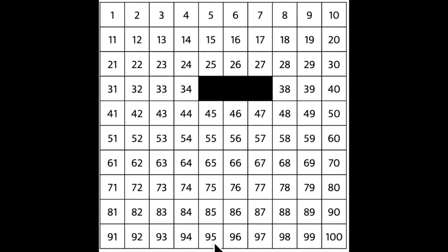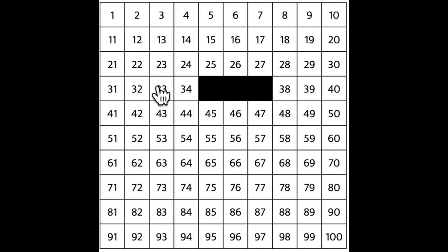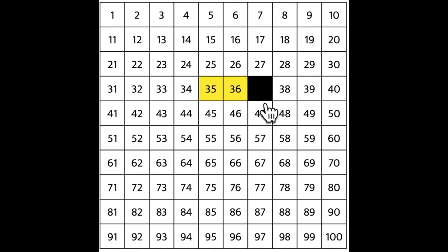Take a look at this 100s chart. Some of the numbers are missing. The numbers that are missing are all next to each other. I need to figure out if the numbers are missing from a row or a column. Since the numbers that are missing are moving from left to right, that means they are missing from a row. Remember, a row moves up one at a time. To find the missing number I can count up one at a time: 33, 34, 35, 36. What comes next? You got it — 37.